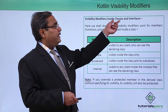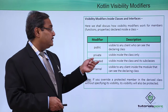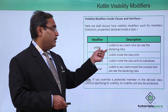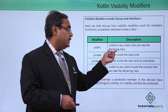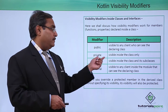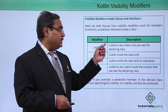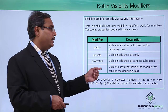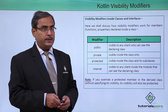Visibility modifiers inside classes and interfaces. Here is the list: public is visible to any client who can see the declaring class; private is visible inside the class only. The other visibility modifiers and their respective descriptions are also given in this table.